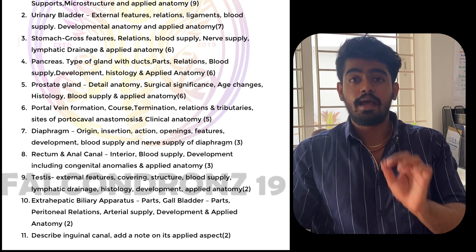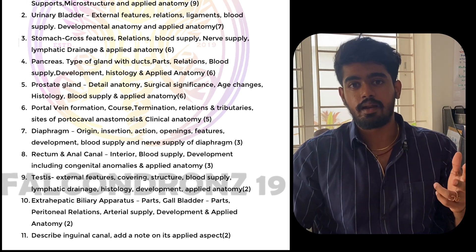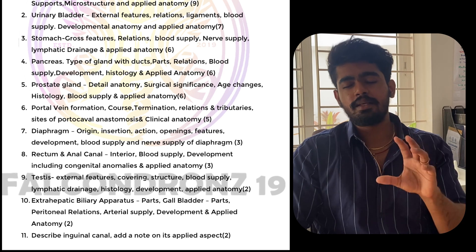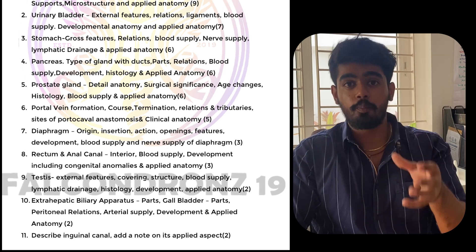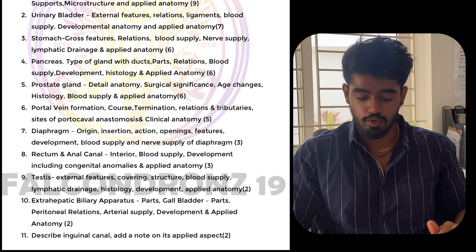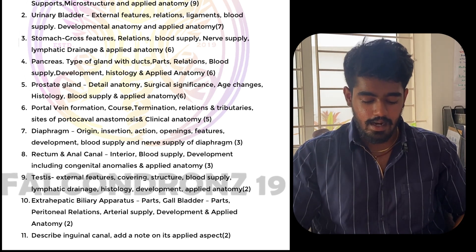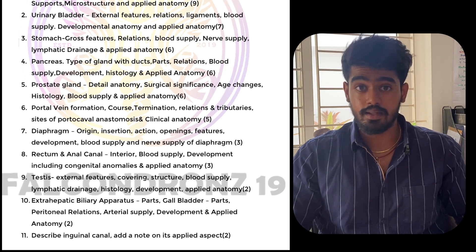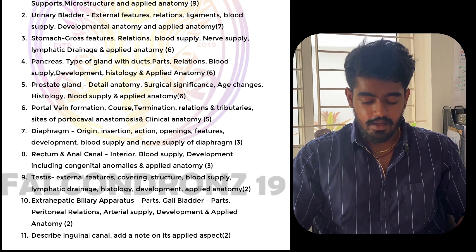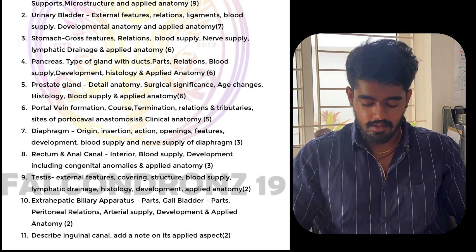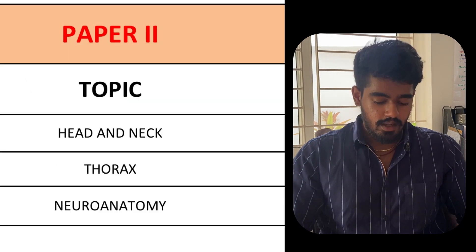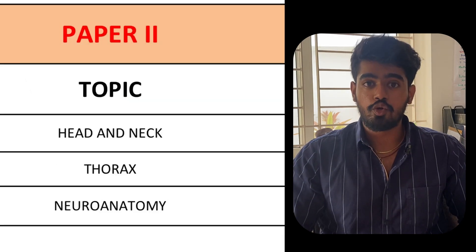Short notes for abdomen and pelvis include: inguinal canal, lesser sac, portal vein, ischiorectal fossa, inguinal ligaments, rectus sheath, and stomach bed. These will be the most important short notes.